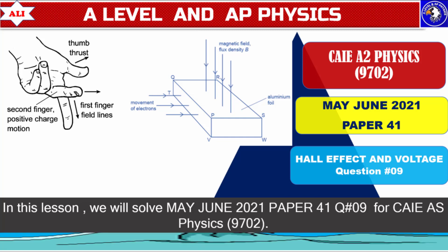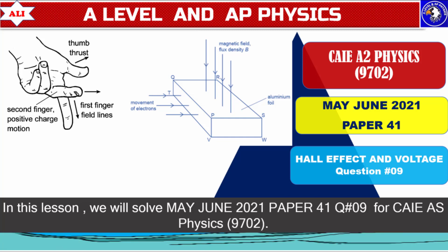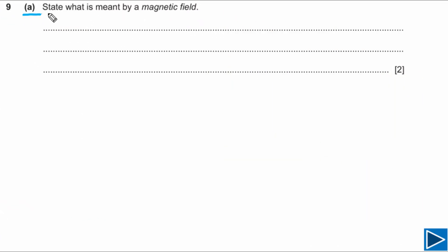Today's question is from May June 2021. For part A we need to state what is meant by a magnetic field. This is a very basic question and very common in many past papers, so you need to understand how to state what a magnetic field is.